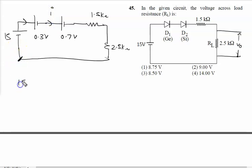So I am going to put it like this: 15 minus 0.3 minus 0.7 minus I into R. These two in series are 1.5 and 2.5, which is 4 kilo ohm, 4000 ohm, equal to 0.